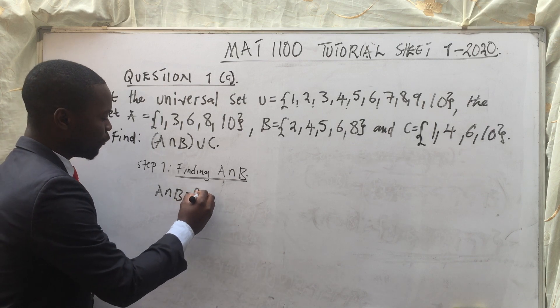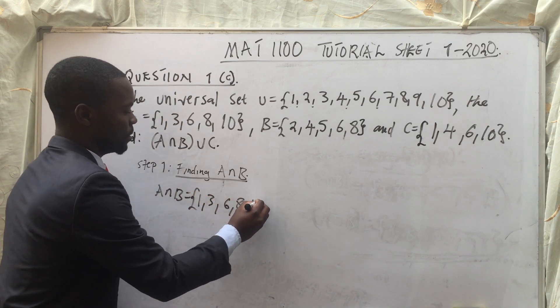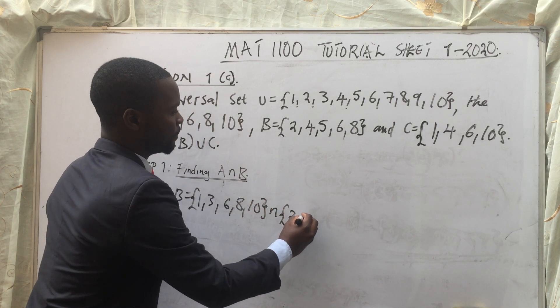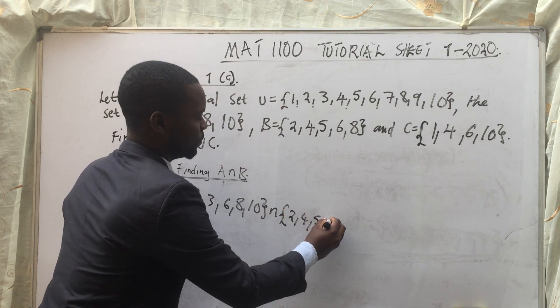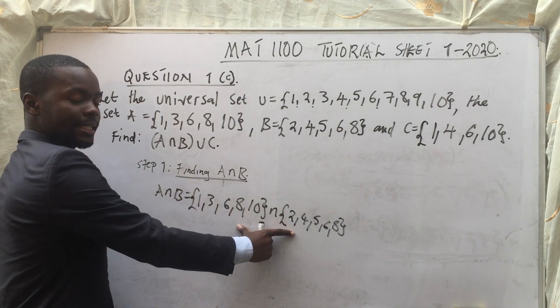So I'm going to illustrate it to you that we have got A, this is our A, and then intersection, this is our B. So this is the same as this.